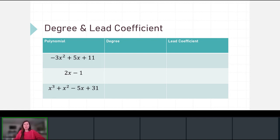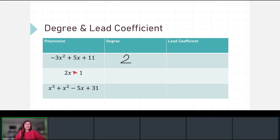Some characteristics of polynomials are its degree and its leading coefficient. Here I have three polynomials. The first is negative 3x squared plus 5x plus 11. The degree of a polynomial is its largest exponent — the largest exponent here is 2, so the degree is 2. Next, 2x minus 1: we know there is a silent 1 as the exponent, so it's really 2x to the first minus 1, giving a degree of 1. Our last polynomial, x cubed plus x squared minus 5x plus 31, has four terms, and the degree is 3 — the largest exponent.